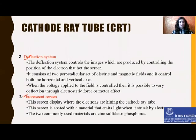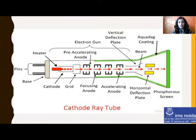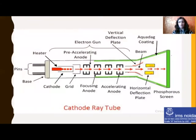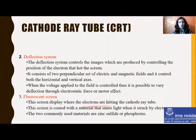The deflection system controls the image — it controls the image by controlling the position of the electrons that hit the screen. The deflection system consists of two perpendicular sets of electric and magnetic fields: horizontal and vertical axes. When the voltage is applied, these fields are controlled to direct where the image is deflected. The fluorescent screen is coated with phosphor. This screen displays where the electrons are hitting on the CRT. The material can be zinc sulfide or phosphor, and when the electron strikes it, it produces a black and white color.